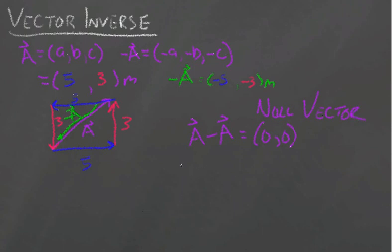Which we call the null vector. And so that's why we call it the inverse - acting A on itself just gives us back this identity, the null vector.